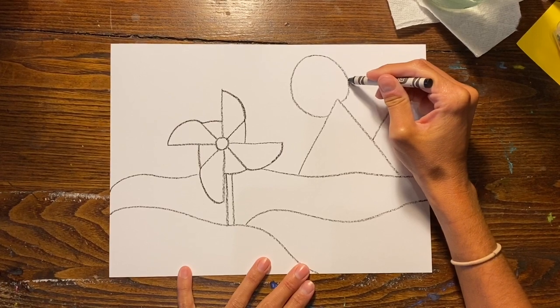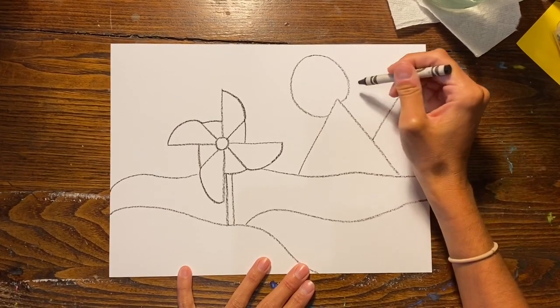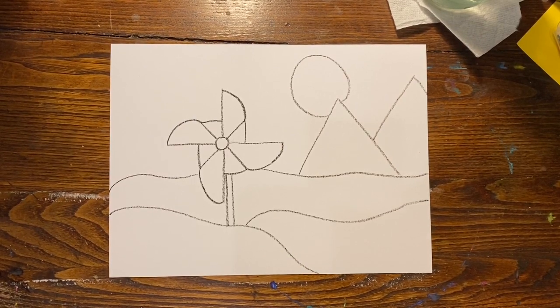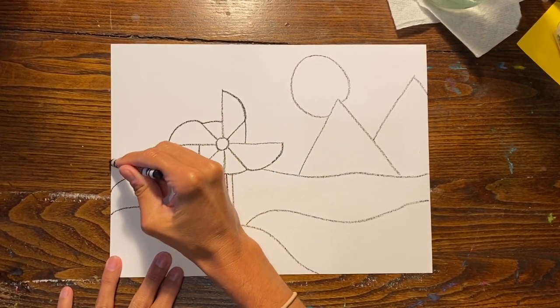If you want to just create some patterns or different types of lines in the background you are more than welcome to do that. I added a sun, or it could even be a moon if you want to, setting behind the mountains.